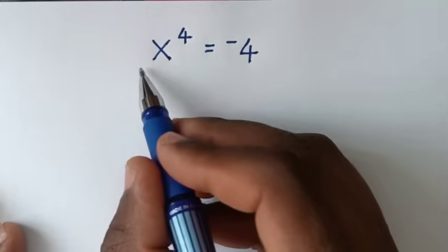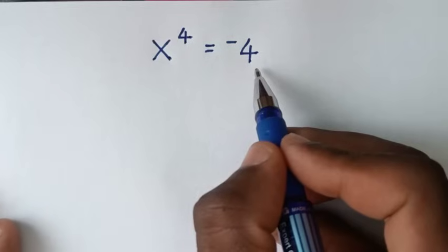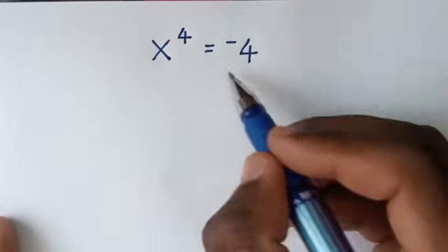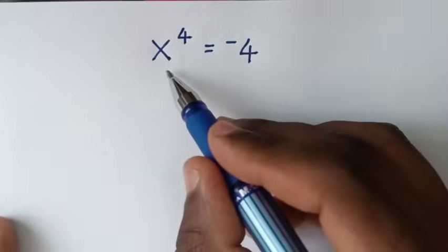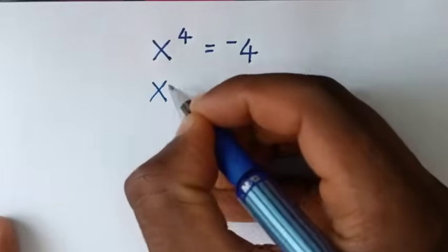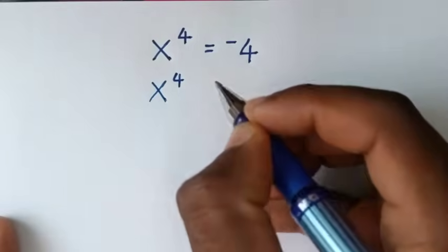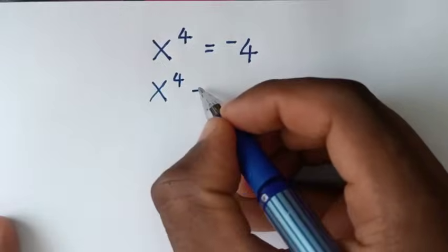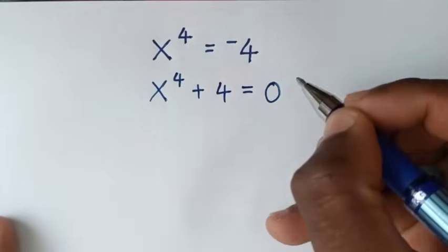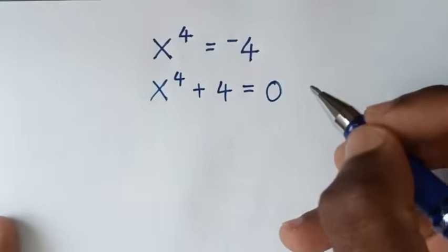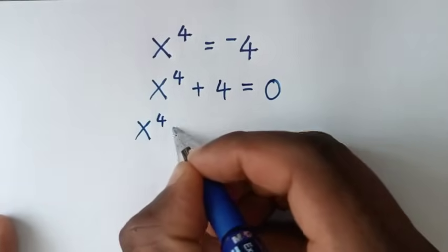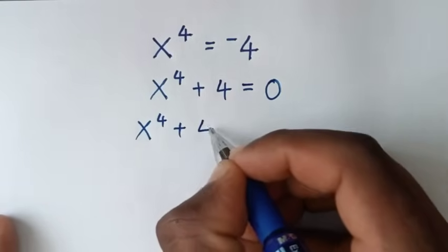To find the values of x from this equation, in the first step we'll take this negative 4 to the left side. So it will be x to the power of 4, and negative 4 taken to this side will be plus 4, is equal to 0. Then in the next step, it will be x to the power of 4 plus 4.